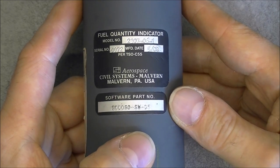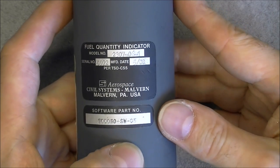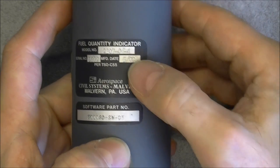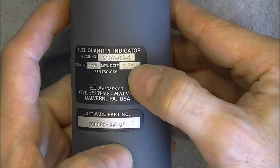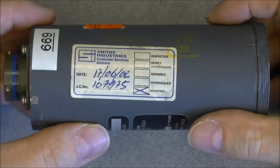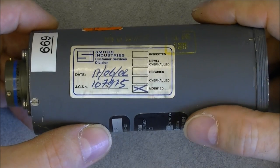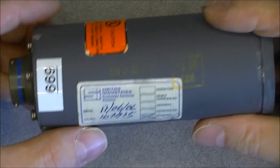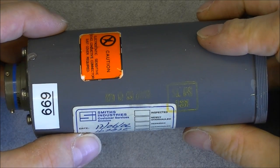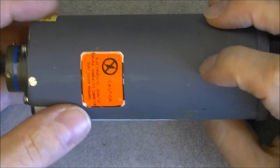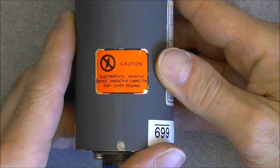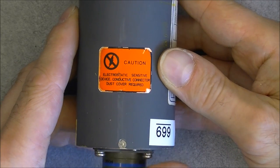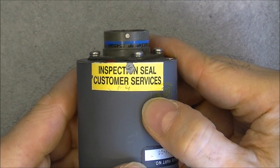We have some software inside, and this one naturally is quite modern. It is made in the year 2000. Interesting, it was modified in 2000 by Smiths Industries. More 2000 date code here. Caution electrostatic sensitive device. And we have an inspection seal for the customer service which is broken.